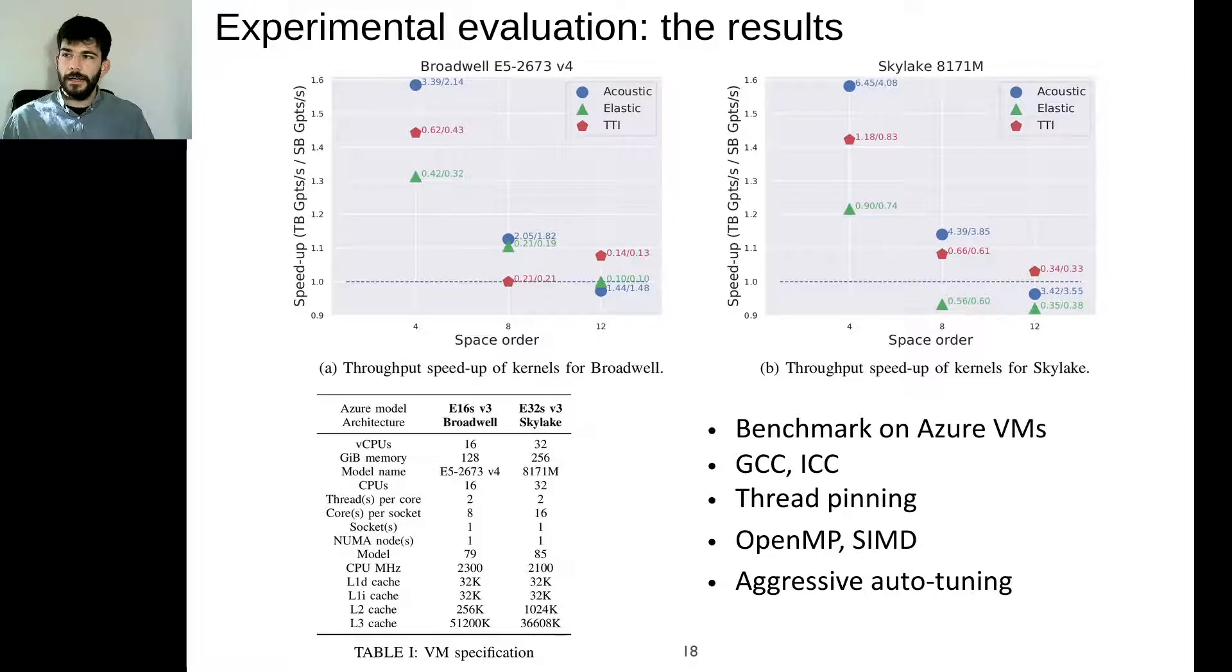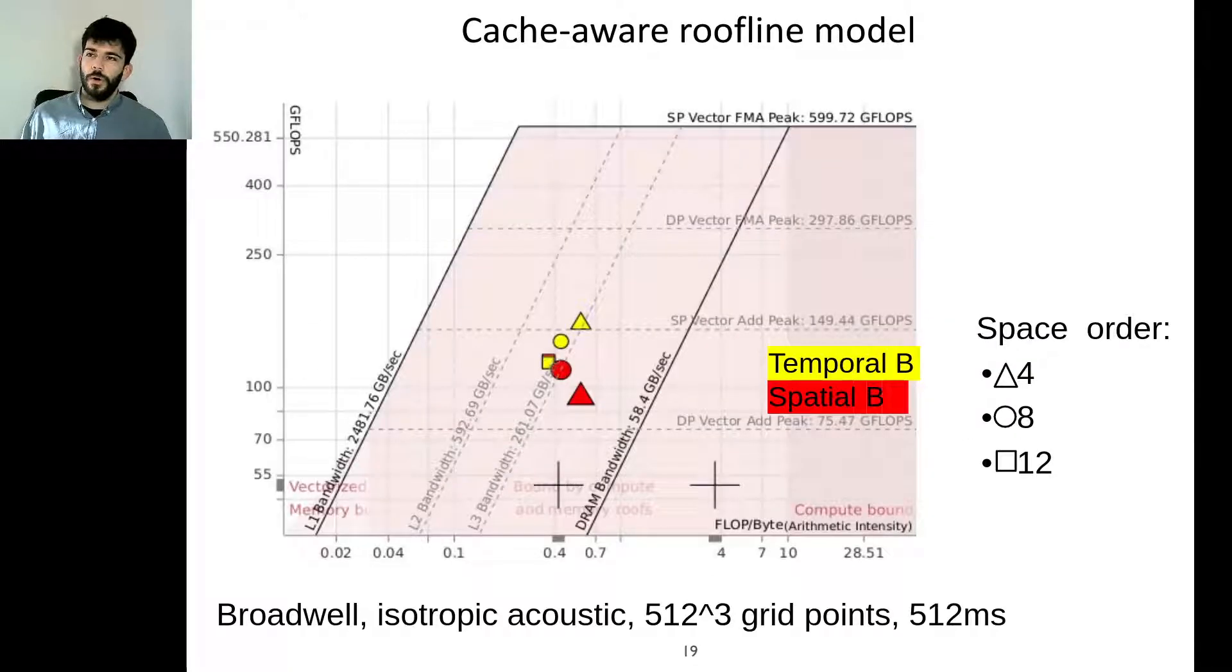We tried both GCC and IC compilers, thread pinning enabled, dynamic OpenMP parallelism and SIMD vectorization, and aggressive auto-tuning for both our temporal blocking scheme concerning the tile and block parameters as well as the automatically generated code from Devito that was highly optimized, space-blocked, vectorized C code. Here we also illustrate a cache-aware roofline model that shows the improvement coming from space block to temporal blocking, breaking the L3 bandwidth roofline on the Broadwell virtual machine.